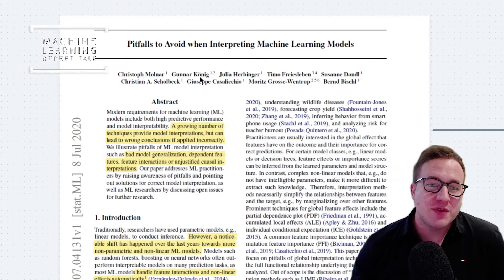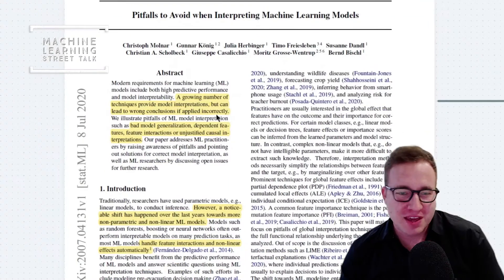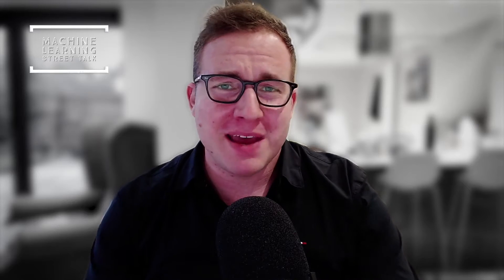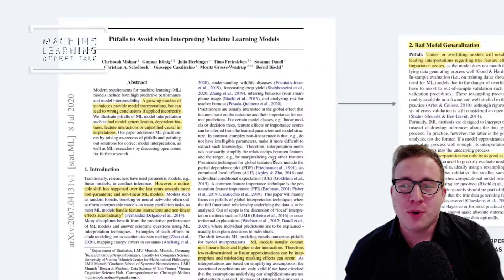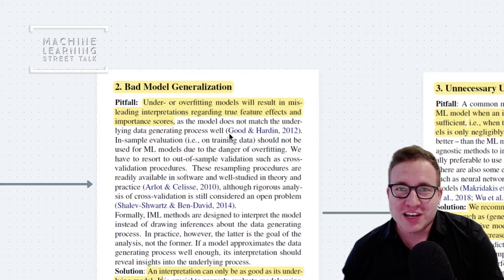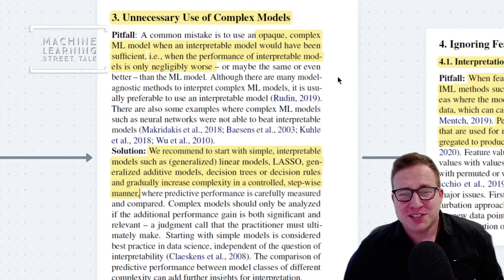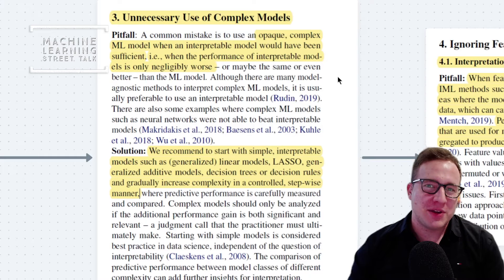In July of last year, he also released the paper Pitfalls to Avoid When Interpreting Machine Learning Models. In this paper, he points out that there's a growing number of techniques providing model interpretations, but many will lead to the wrong conclusions if used incorrectly. The first pitfall is assuming that the model generalizes well — if the model is under-fit or over-fit, the interpretation method will perform badly as well. An interpretation can only be as good as the model underlying it. The next pitfall is the unnecessary use of complex models when an interpretable model would have sufficed — when the performance of an interpretable model is only negligibly worse than one of these black box models.